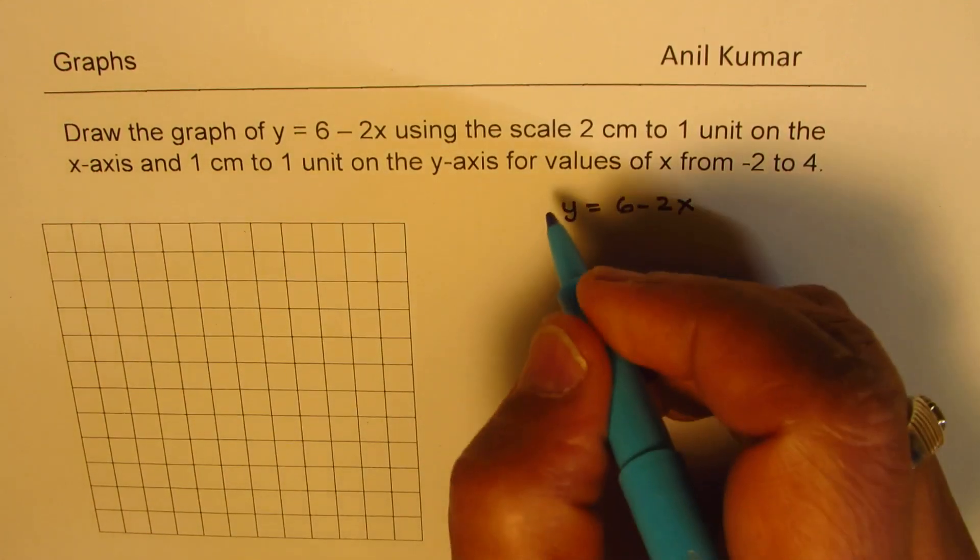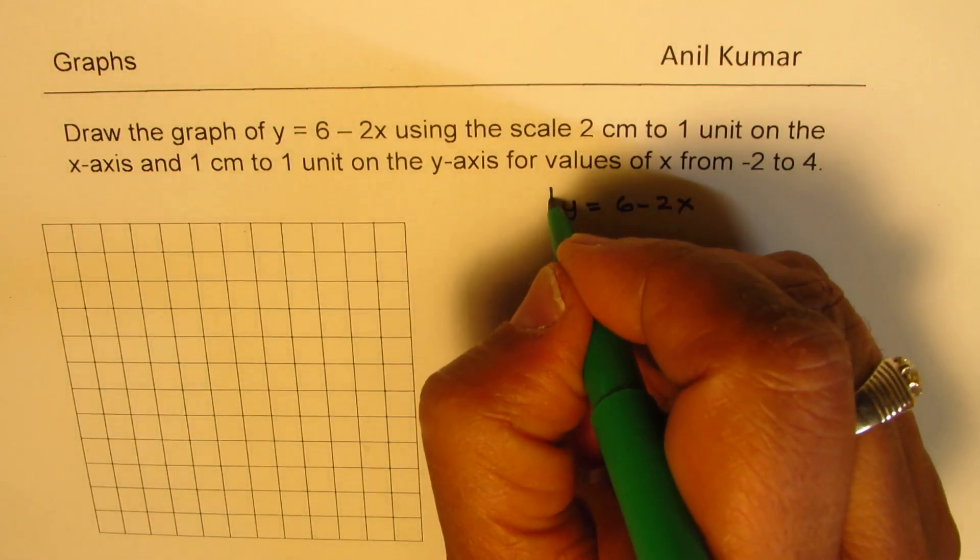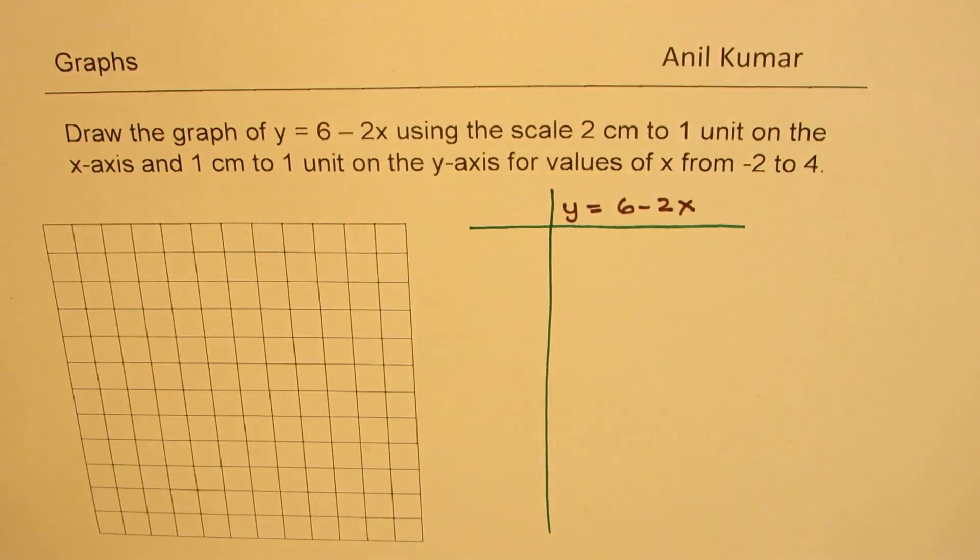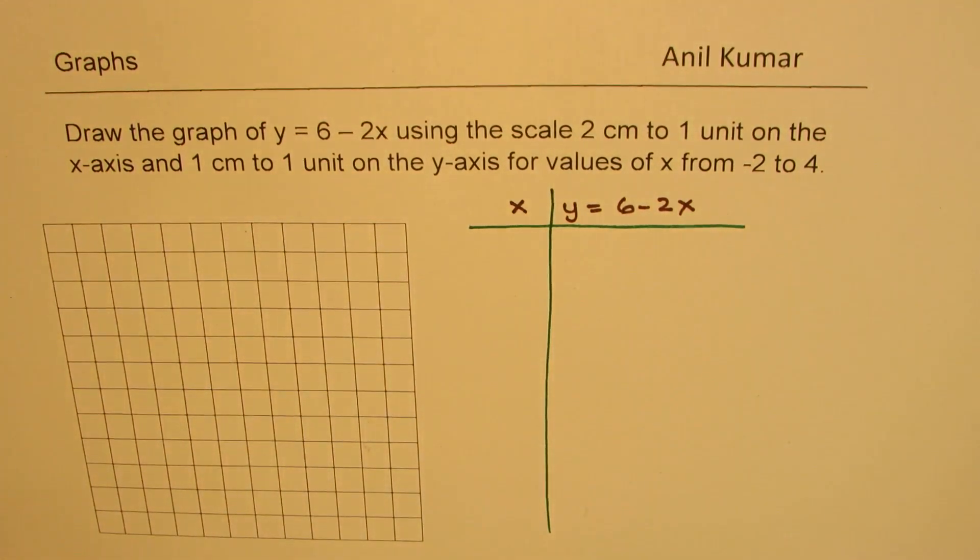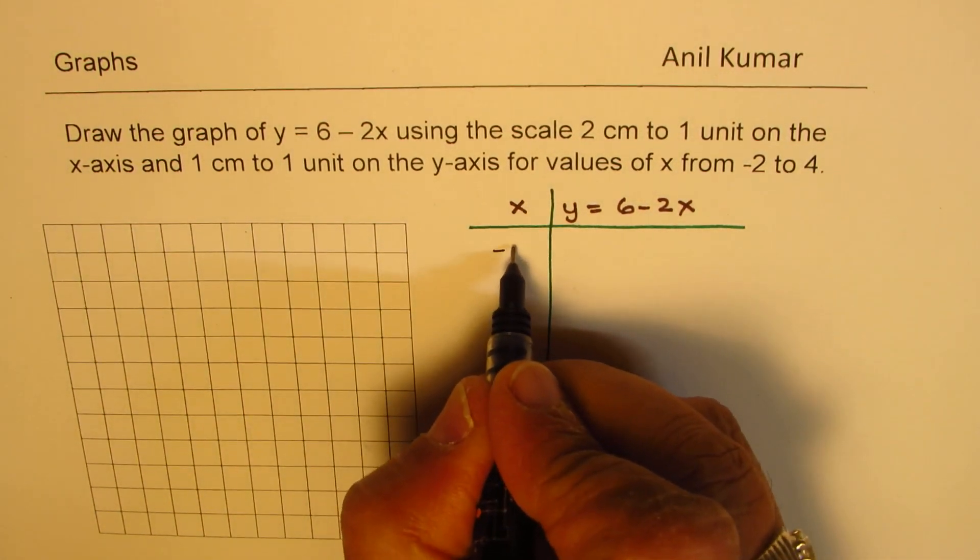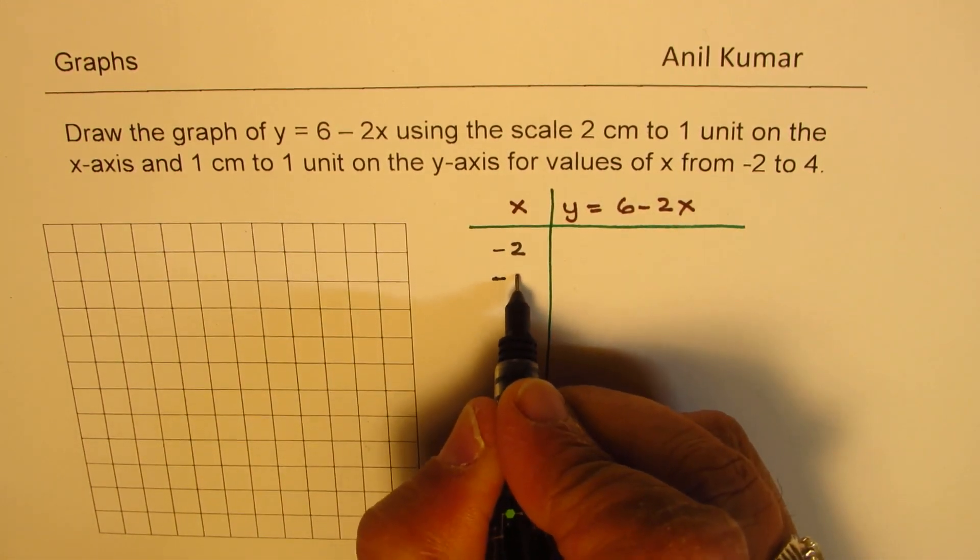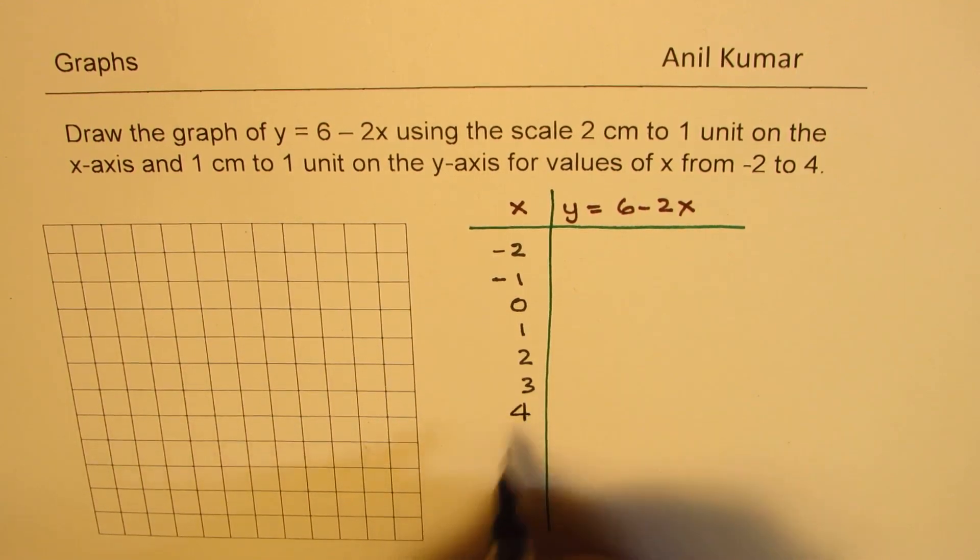So let's make a table of values here for the given equation. We'll take up the x values as mentioned here. The values of x are from minus 2 to 4, right? So we'll just calculate different values from minus 2 to 4. So that is to say minus 2, minus 1, 0, 1, 2, 3, and 4.